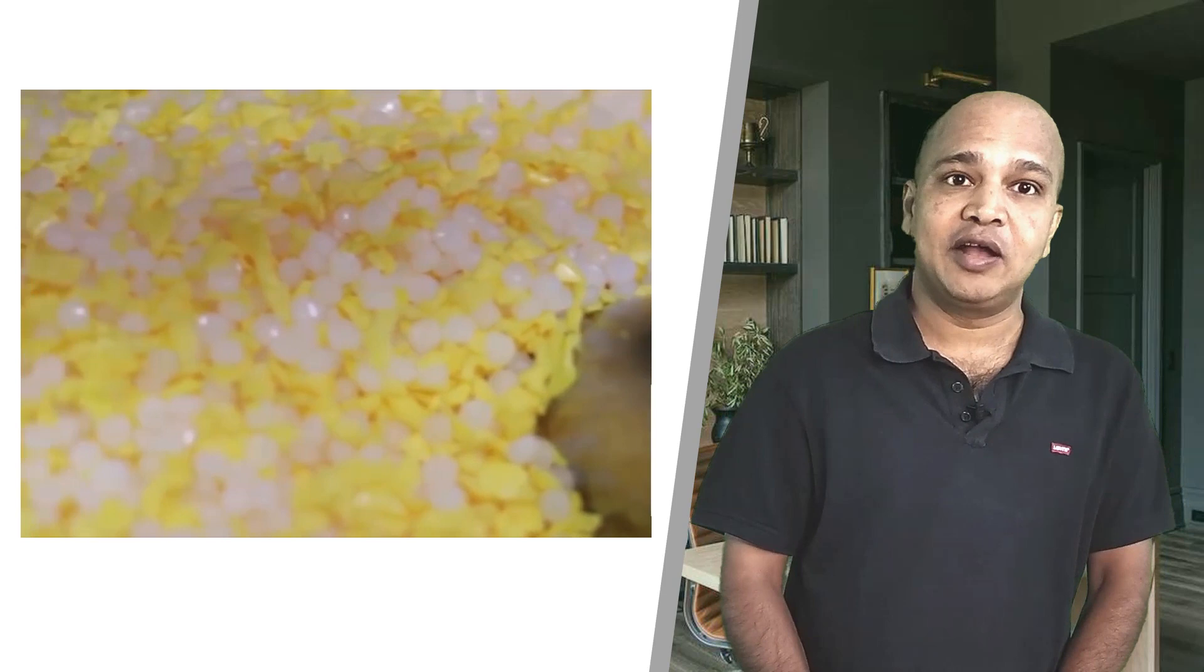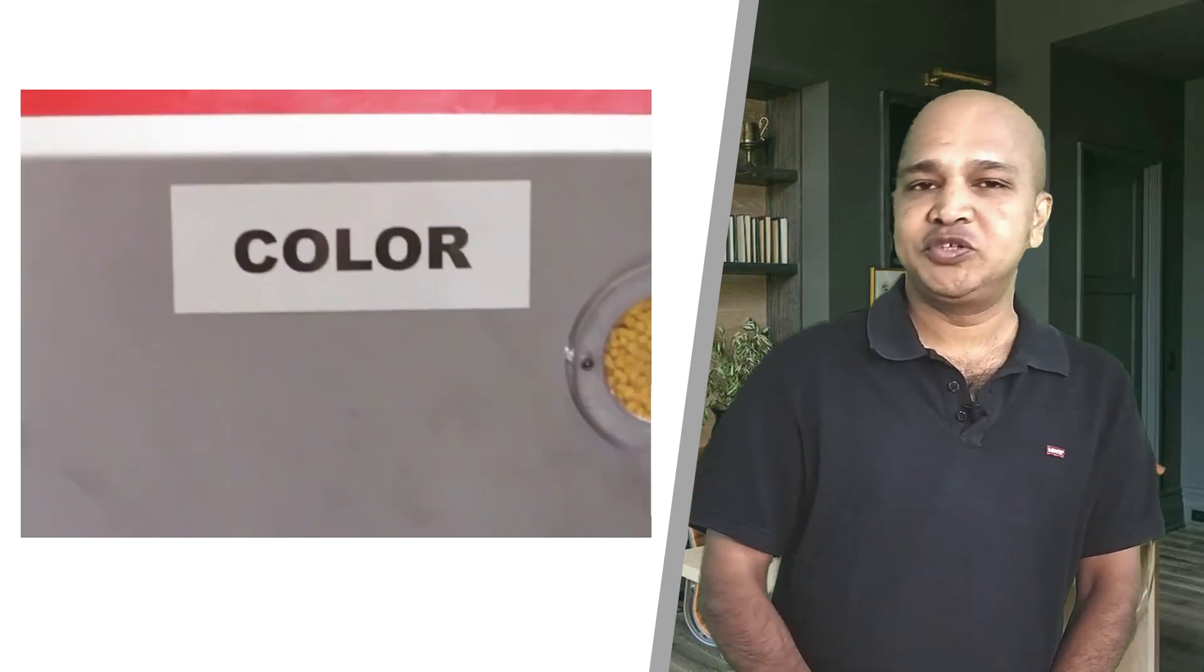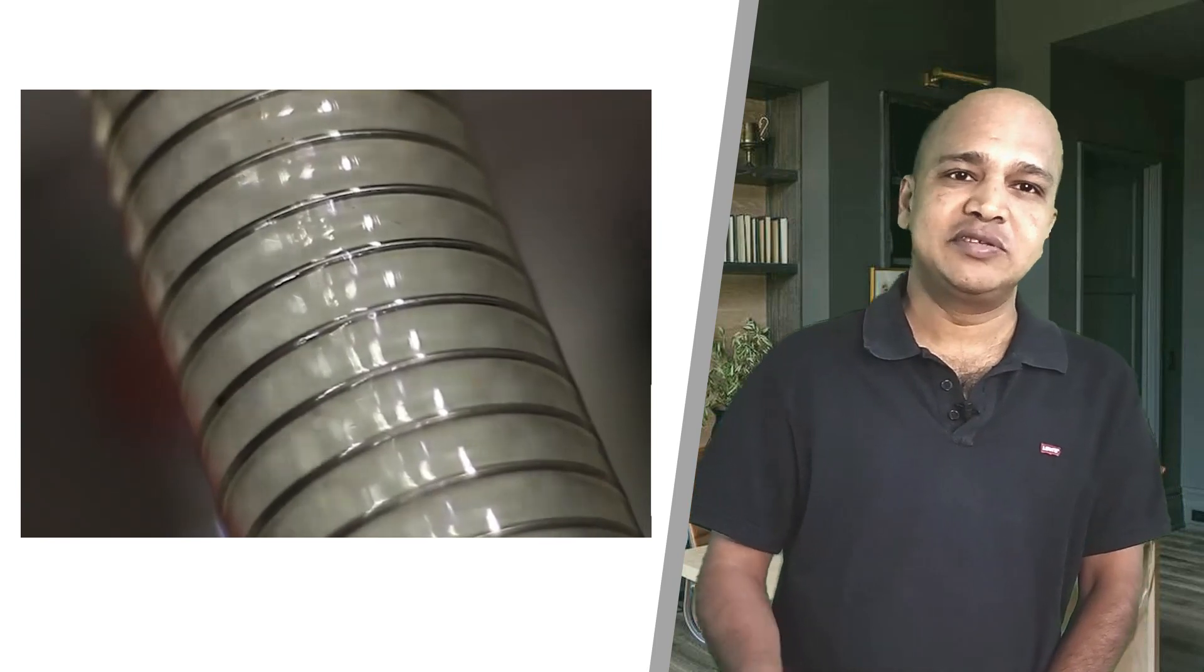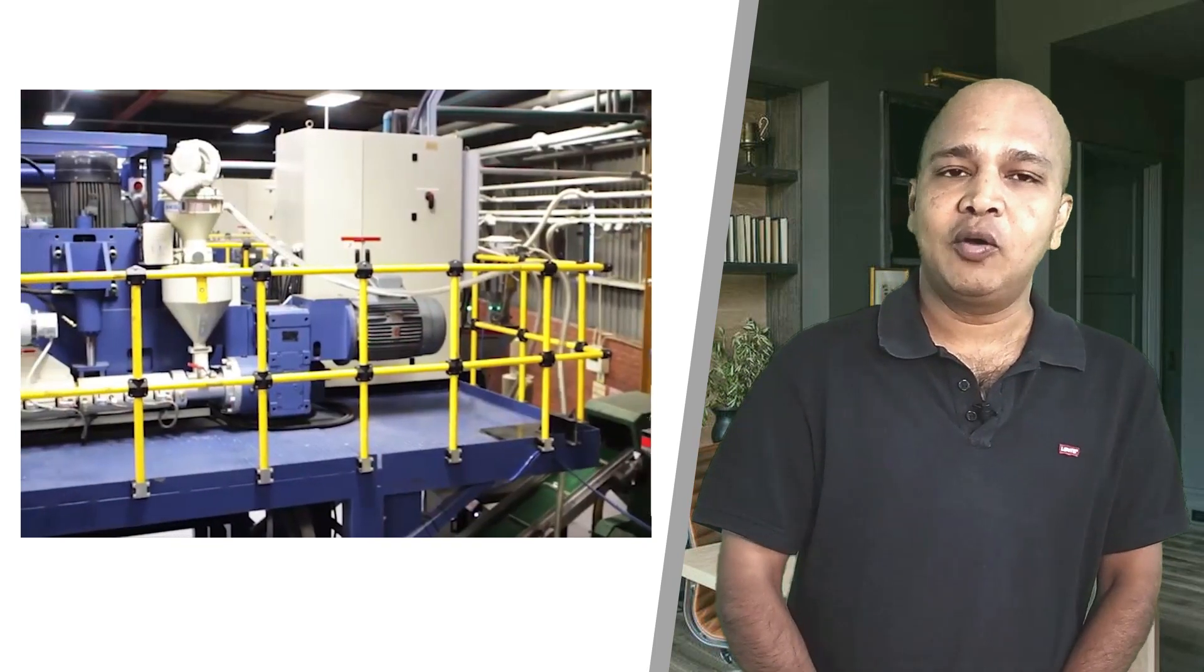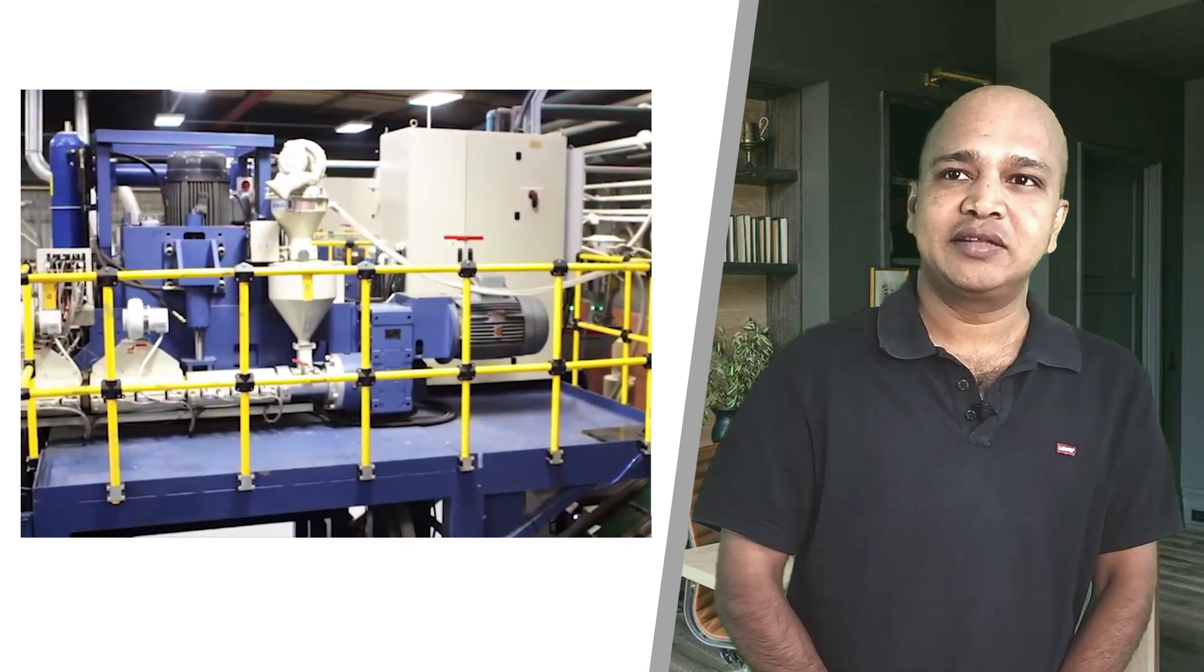Next interesting process is blow molding. In blow molding we make the products which are of very thin cross section and basically they're hollow. The common example of those parts are plastic bottles, aqua bottles which you have seen like Coca-Cola bottles, Bisleri bottles and all those kind of bottles. That's done by blow molding.